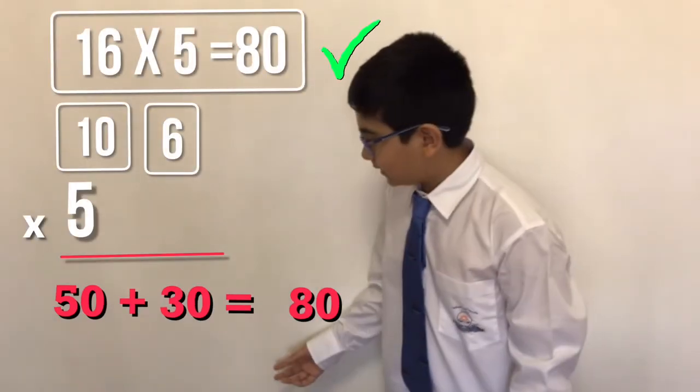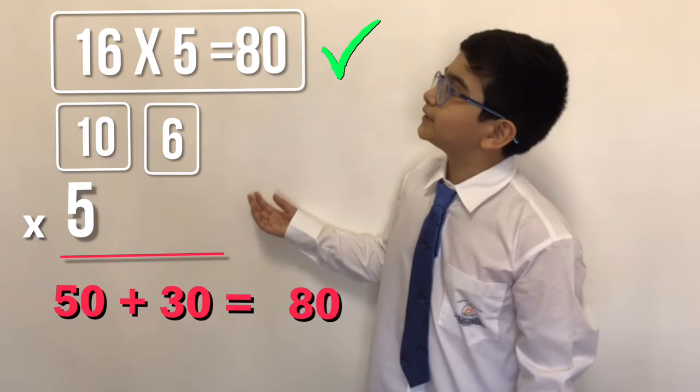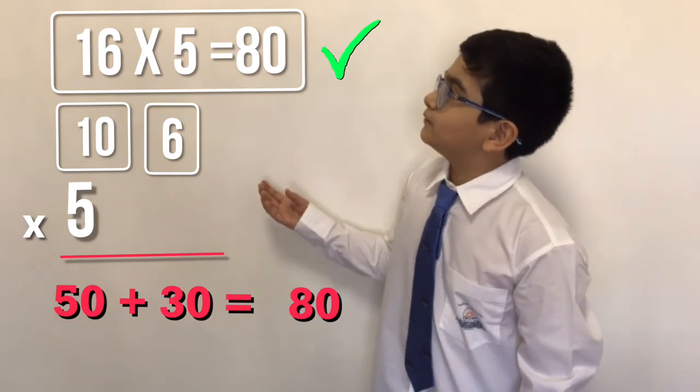Friends, 80 is the product of 16 and 5. So friends, this is the grid method of multiplication. It is very easy.